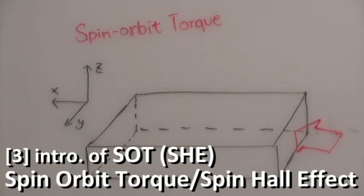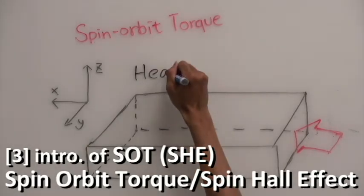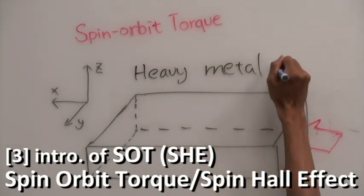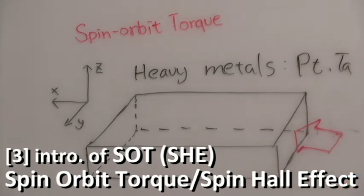Spin-orbit torque is arising from the spin-orbit coupling of non-magnetic heavy metals, such as platinum or tantalum.